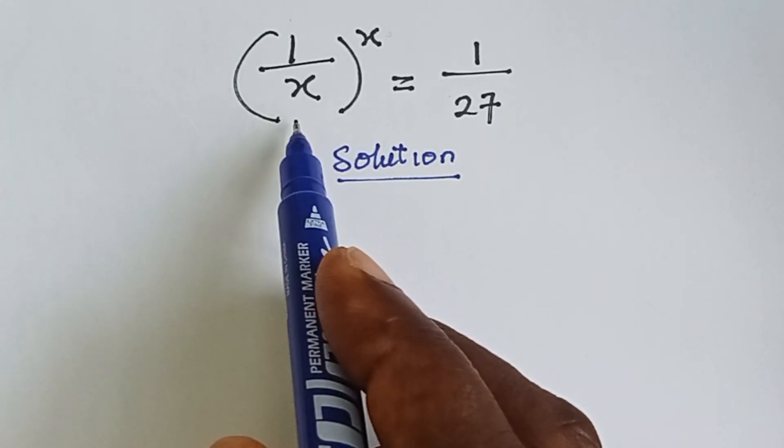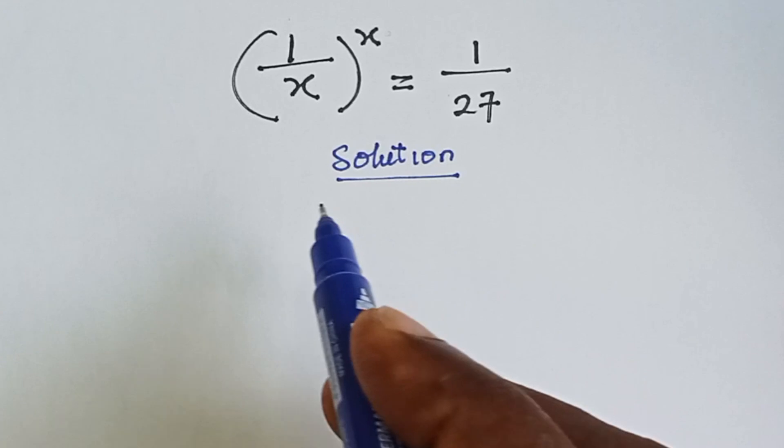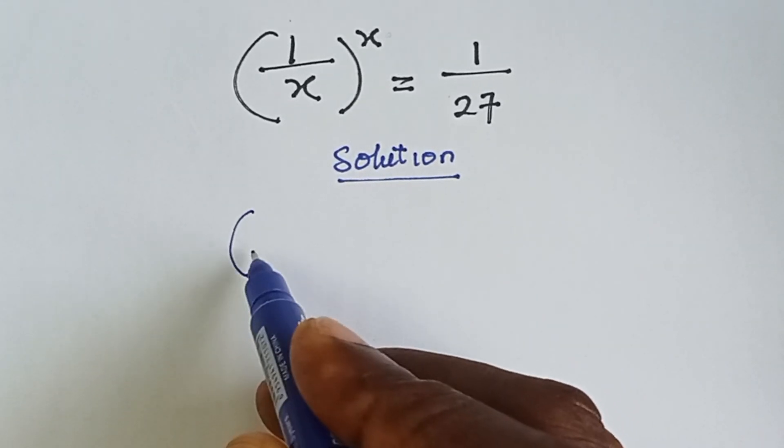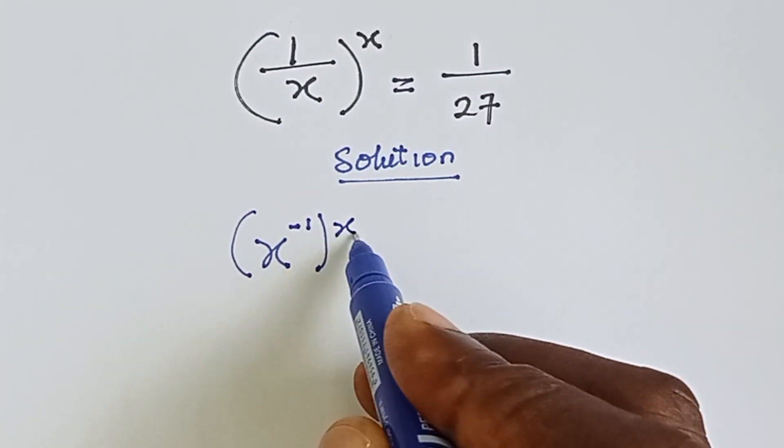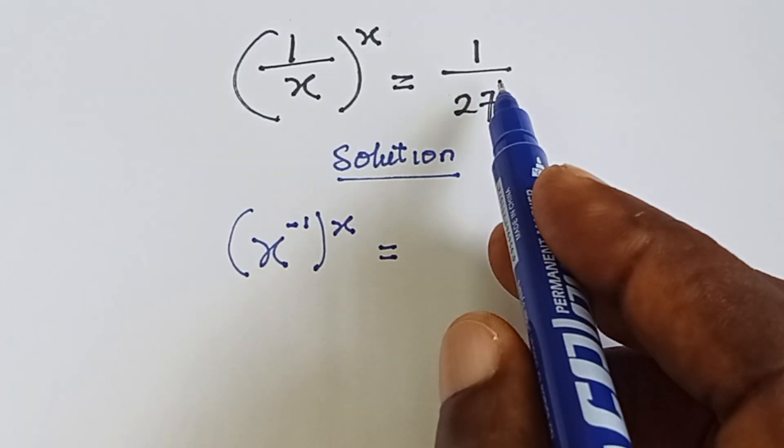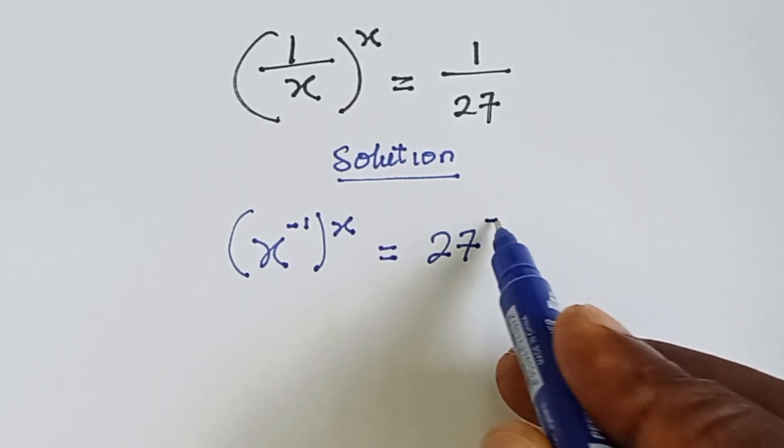We have 1 over x raised to the power x equals 1 over 27. This 1 over x can also be written as x raised to the power minus 1. Then this equals 1 over 27, which can be written as 27 raised to the power minus 1.